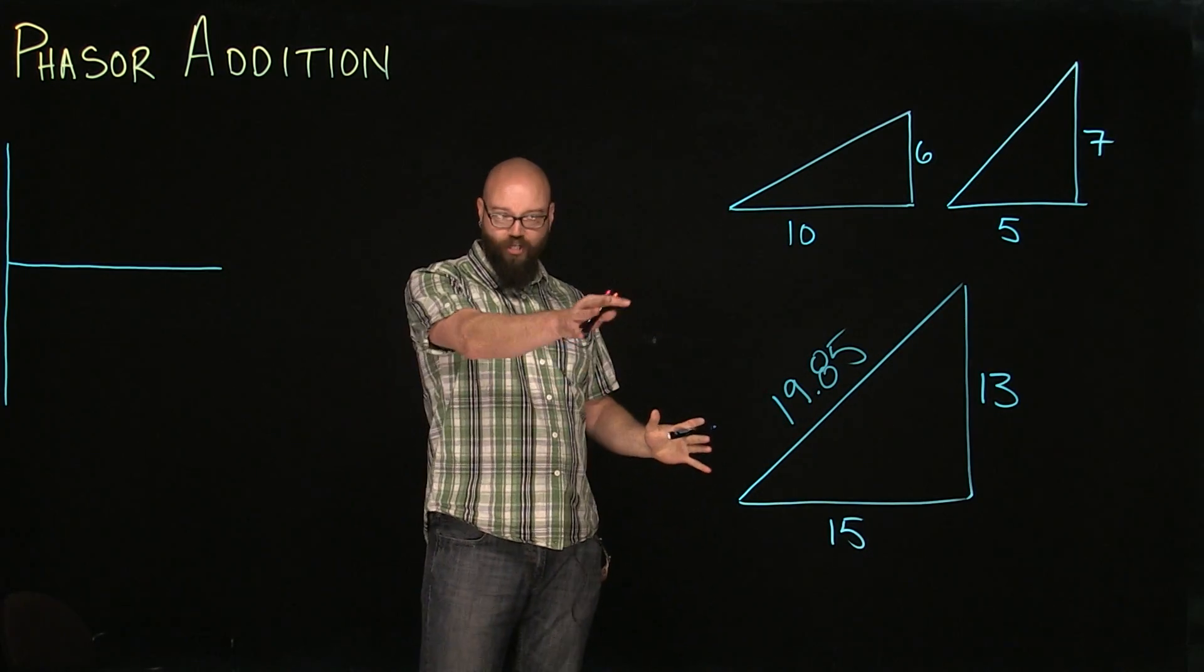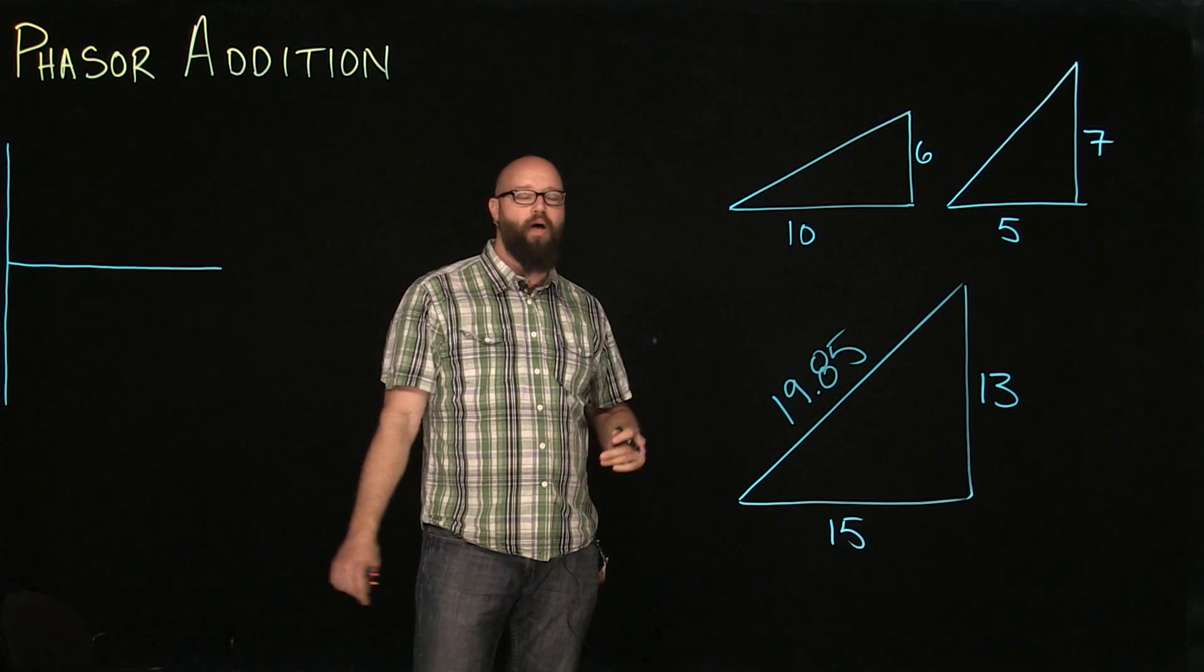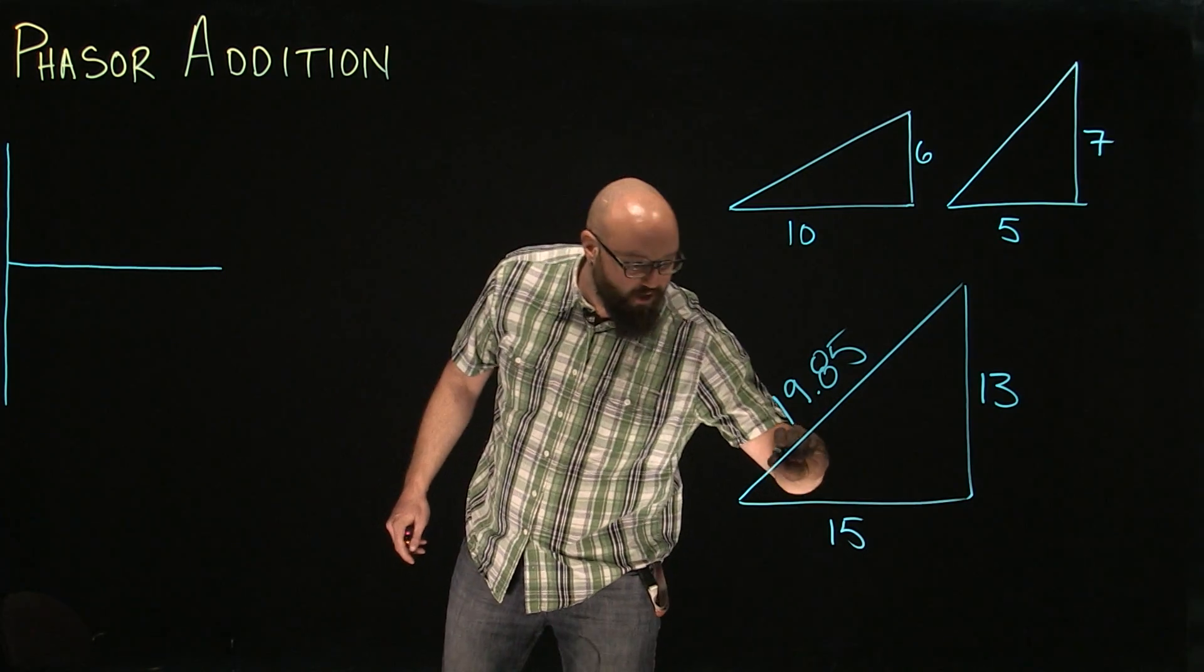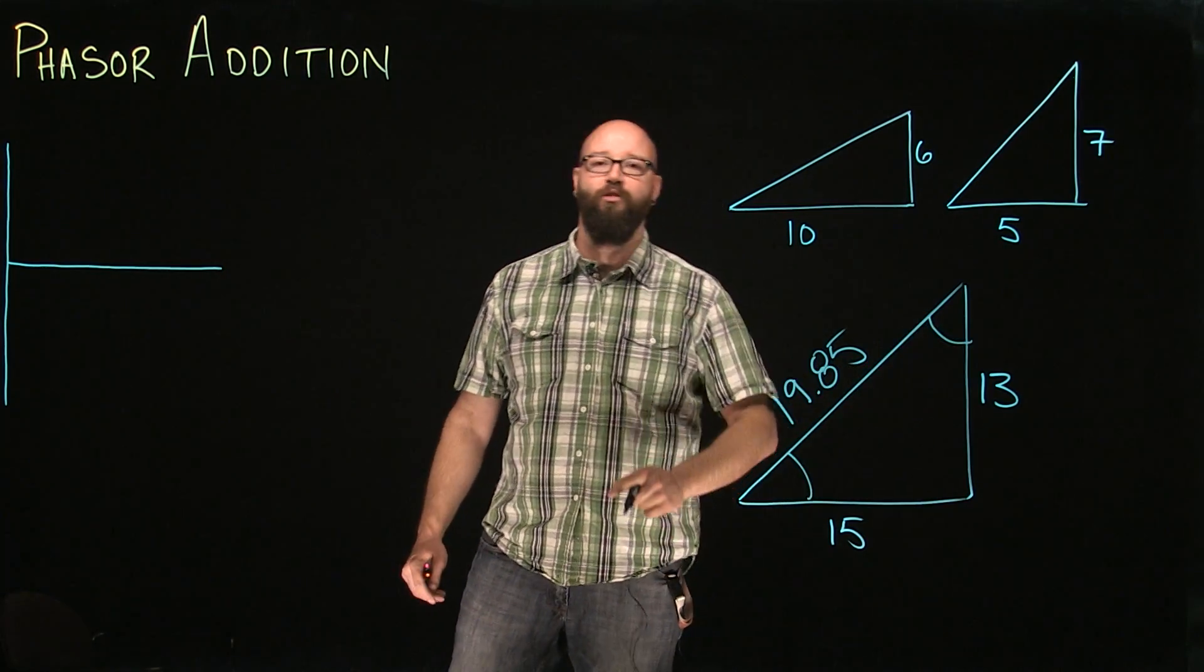So, once I've achieved this, I could use my SOHCAHTOA, I could use my trigonometric functions, and I could figure out all missing angles on my resultant triangle.